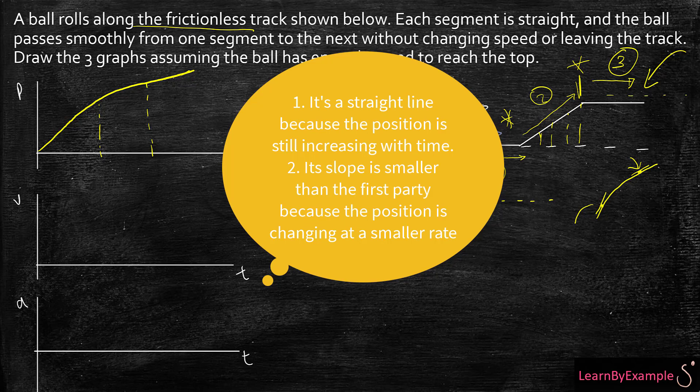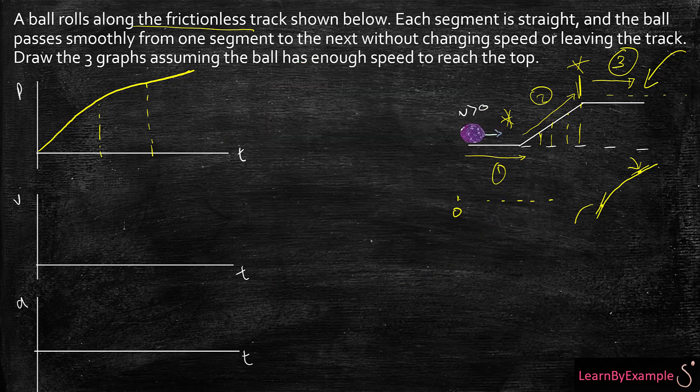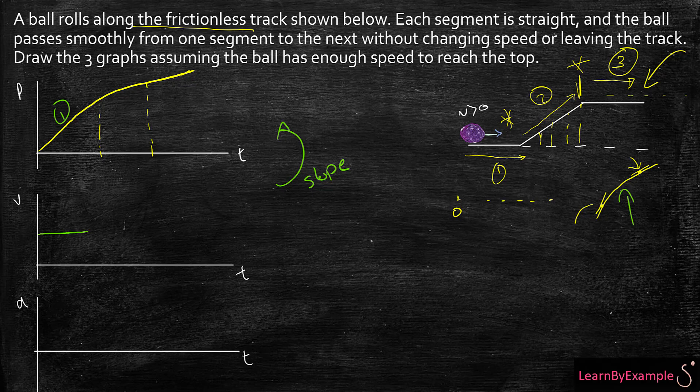Now let's graph the velocity-time graph. The velocity-time graph would just be the slope of the previous graph. So the first part here, the slope of it is a positive number, so I'm just going to have a positive slope here. The second part, it looks like it has a negative slope. We talked about how the slope is decreasing here, so I will have a negative slope which is going to look like that. Does it ever get to zero? No.